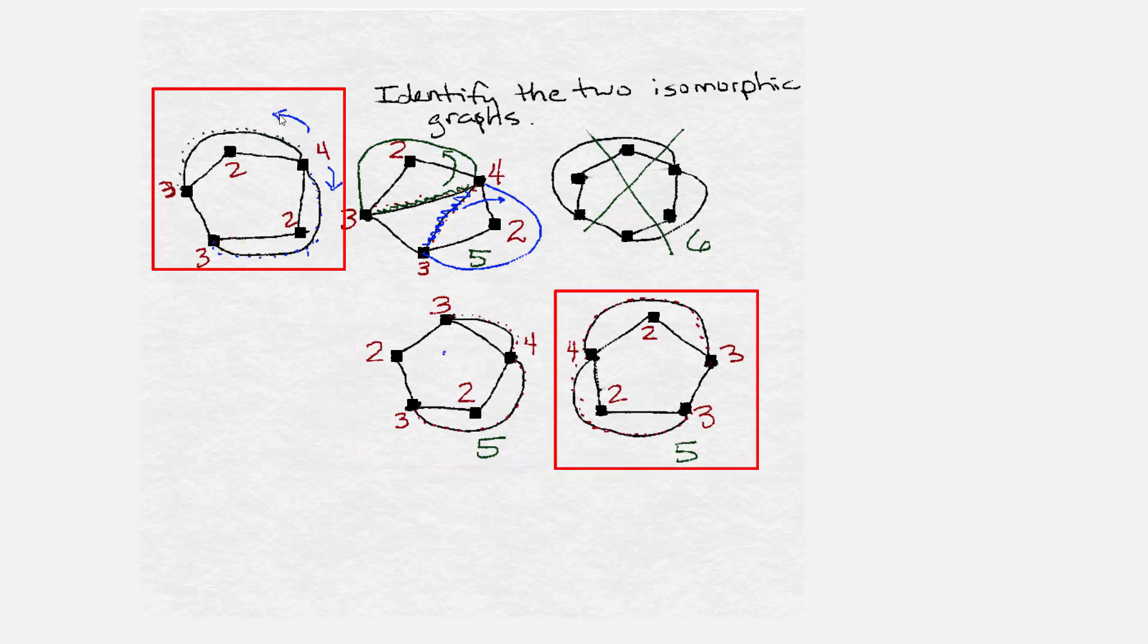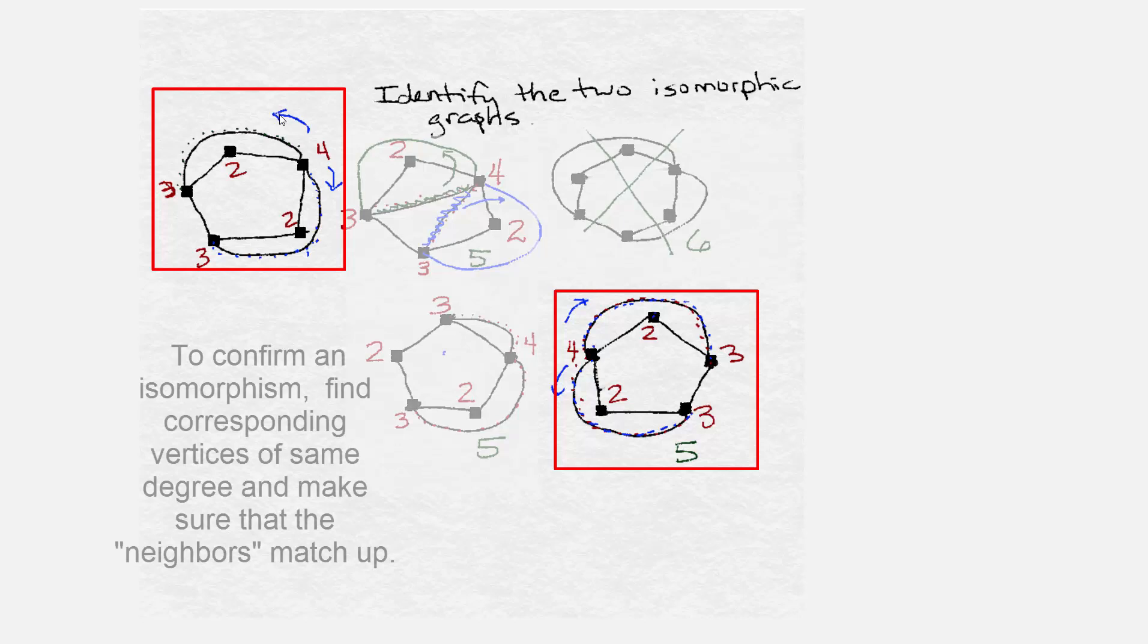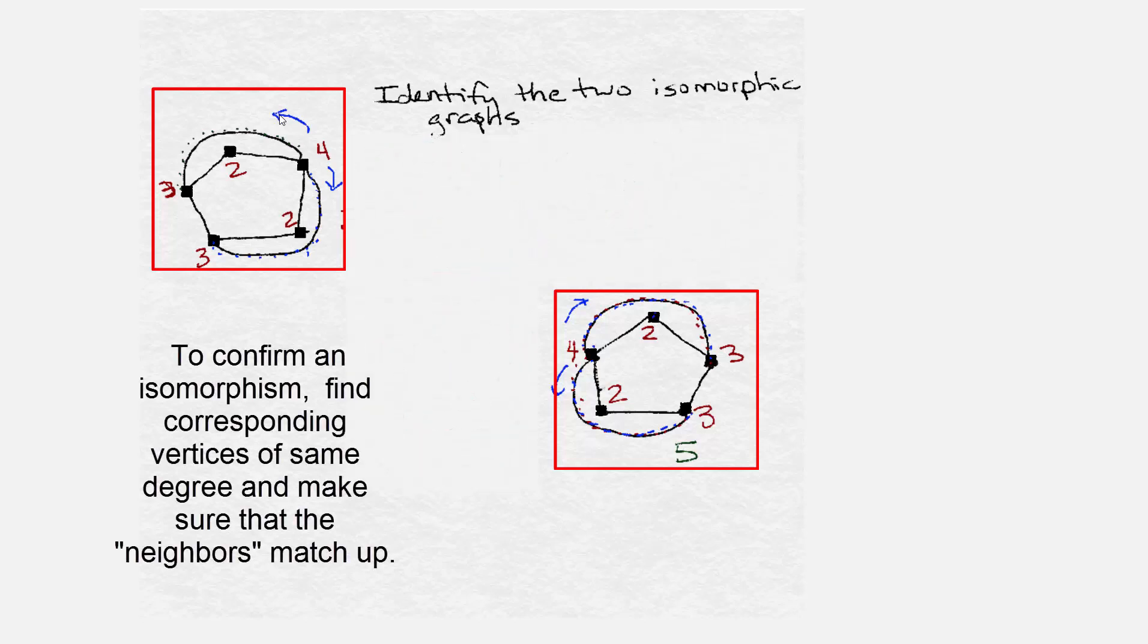Looking at the other graph, you see this the same thing is happening. When I leave the degree 4 vertex going on the outside edge to the degree 3 vertex, I'm skipping over a vertex of degree 2, and the same thing going in the other direction. Well that's what we saw in the first graph. So I'm going to hypothesize that this graph is the same as this one.